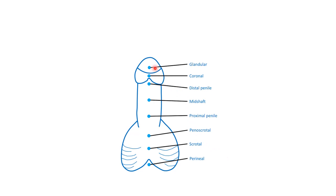As discussed, this is glandular hypospadias where the external meatus is on the glans penis. This is coronal hypospadias where the external meatus is at the junction of the glans and body. This is penile hypospadias where the external meatus is on the underside of the penis, and this is perineal hypospadias where the external meatus is at the bifid scrotum.